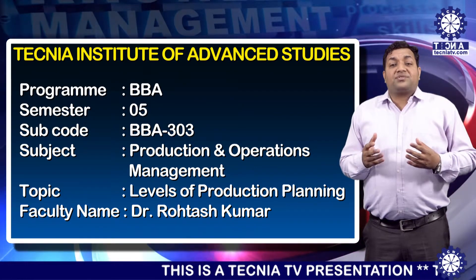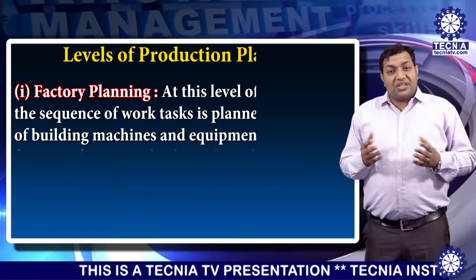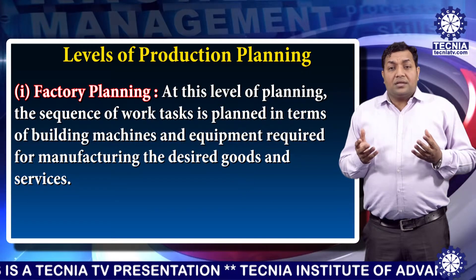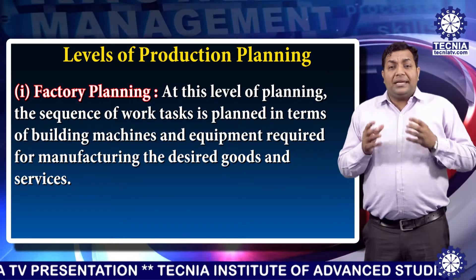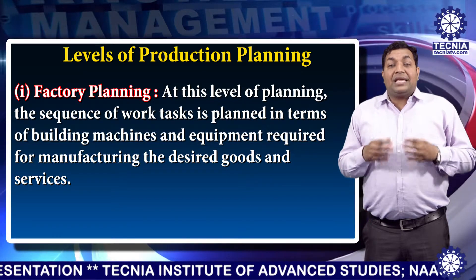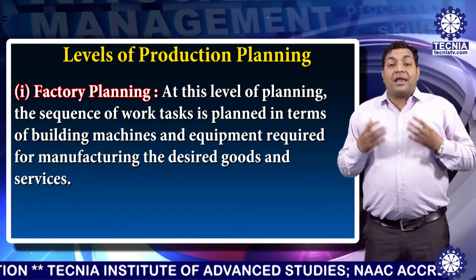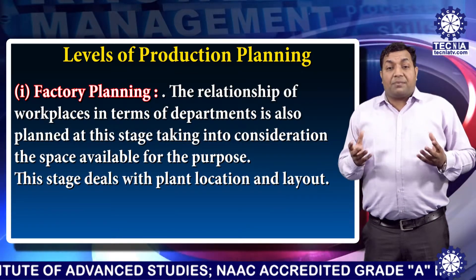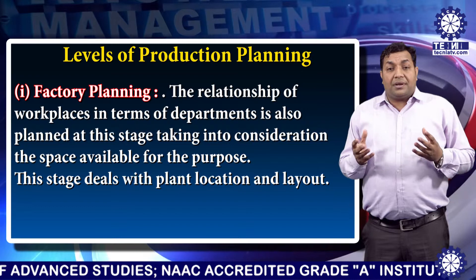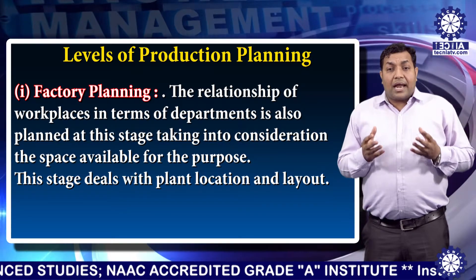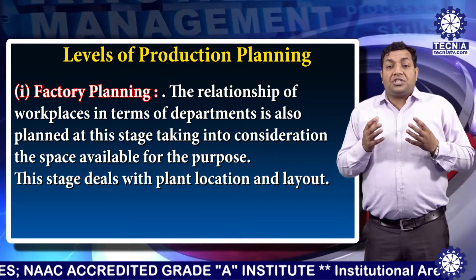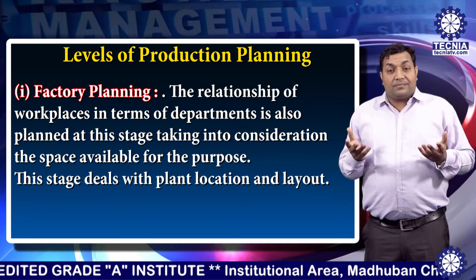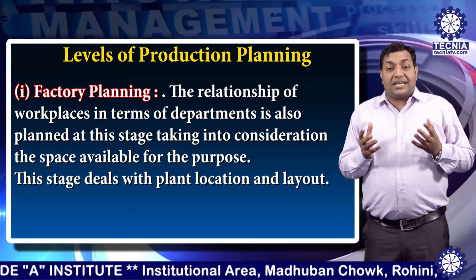The first level is factory planning. At this level of planning, the sequence of work tasks is planned in terms of the building, machines, and equipment required for the manufacturing of the desired goods and services. The relationship of the workplace in terms of departments is also planned, taking into consideration the space available for the objectives of the organization. This stage deals with plant location and layout.